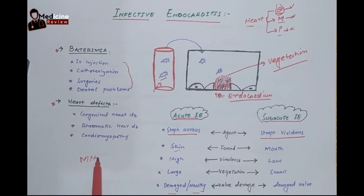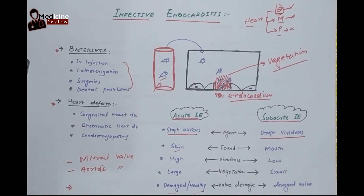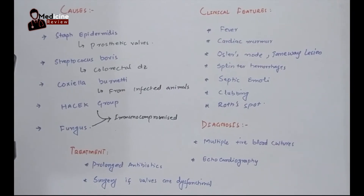Most commonly, the mitral valve gets damaged, as well as the aortic valve — meaning the left-sided heart valves are severely affected in infective endocarditis. One important point to remember: if infective endocarditis occurs in an IV drug abuser, the most commonly involved valve is the tricuspid valve. Otherwise, the mitral and aortic valves are the primary ones damaged.